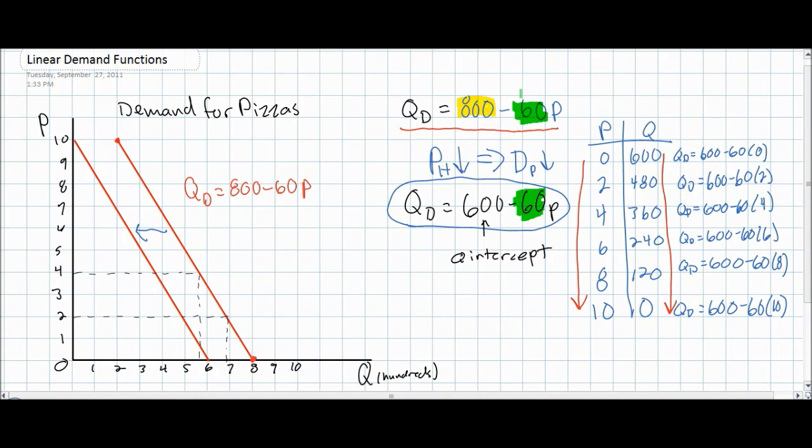Notice, however, that the A variable has changed due to the low price of hamburgers. The total demand for pizzas is now lower than it was before the price of hamburgers fell, meaning that the entire demand curve is shifted to the left. Our Q-intercept is now at 600, and at a price of $10, there are now zero pizzas demanded.